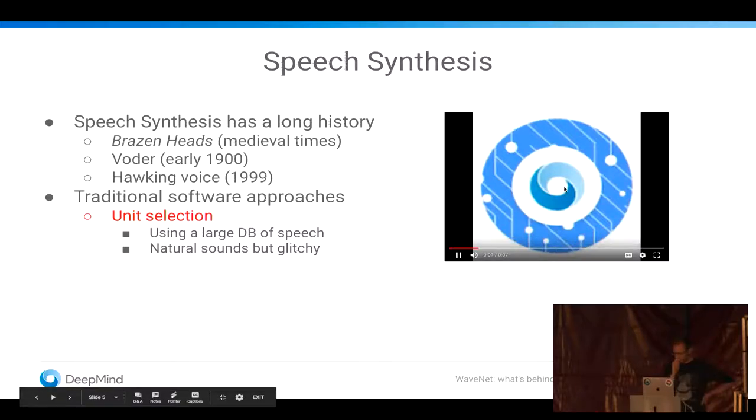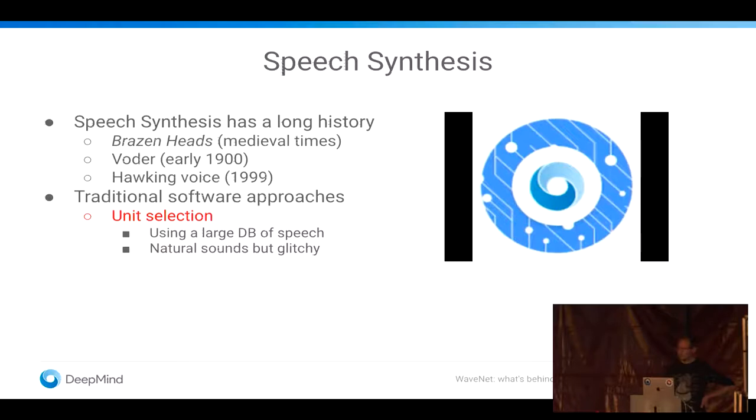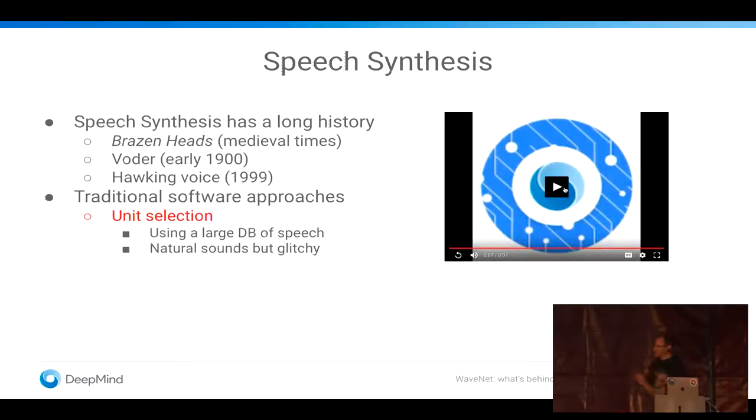The avocado is a pear-shaped fruit with leathery skin, smooth edible flesh and a large stone. So you can really hear that in the parts where it's trying to say a word, it sounds good. But in between the words or sometimes in between parts of a word that was not part of the database, it sounds really bad.